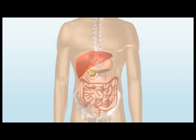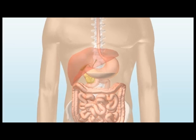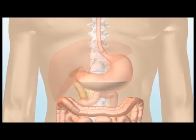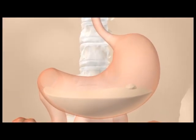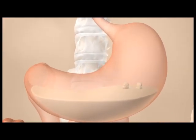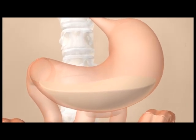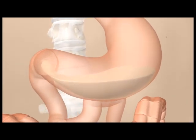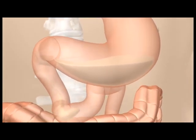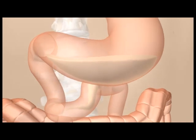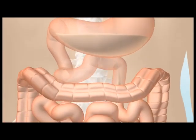In the stomach, the food is broken down into smaller pieces and digestive juices are added. The now liquid food is passed on to the small intestine, where the nutrients are absorbed and digested.